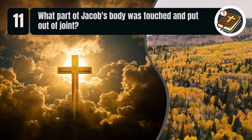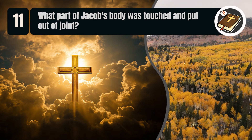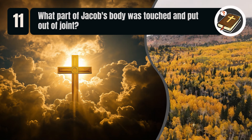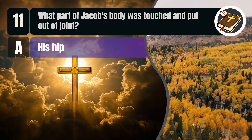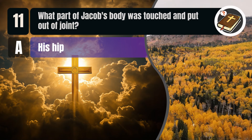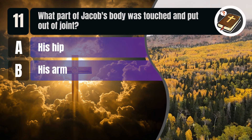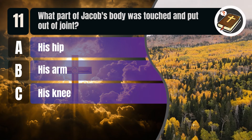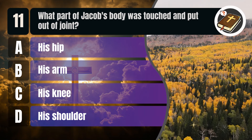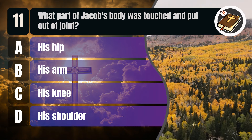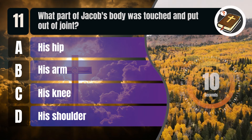Question 11. What part of Jacob's body was touched and put out of joint? A. His hip. B. His arm. C. His knee. D. His shoulder.